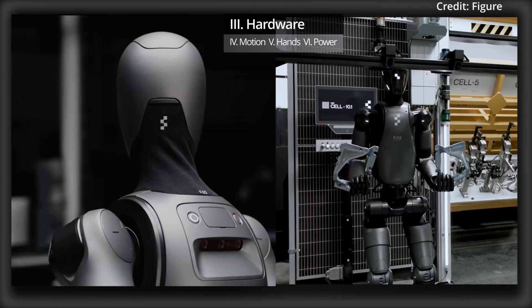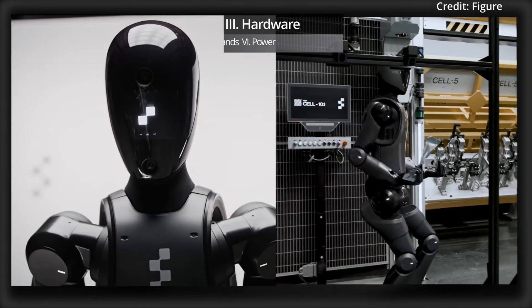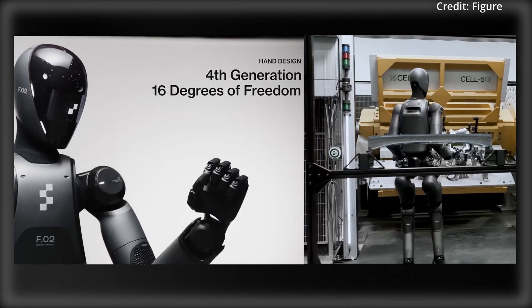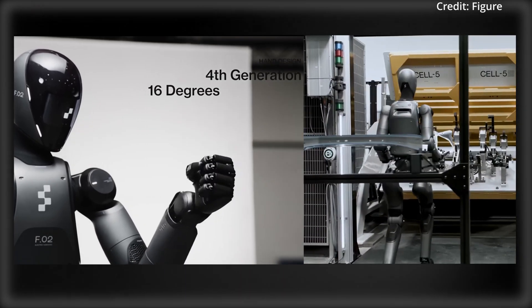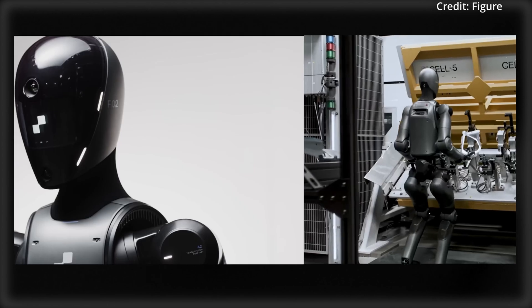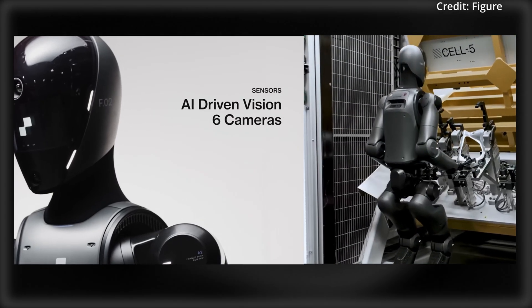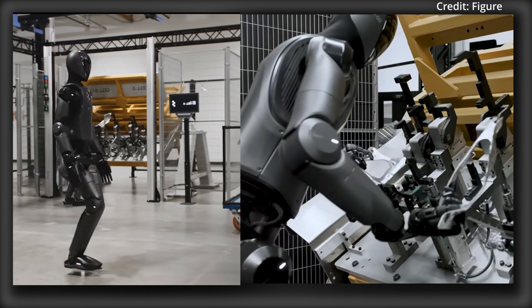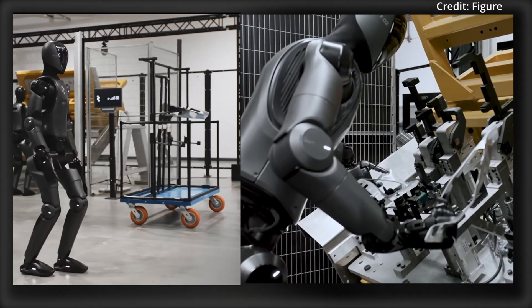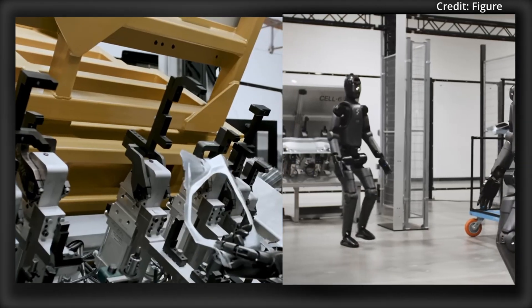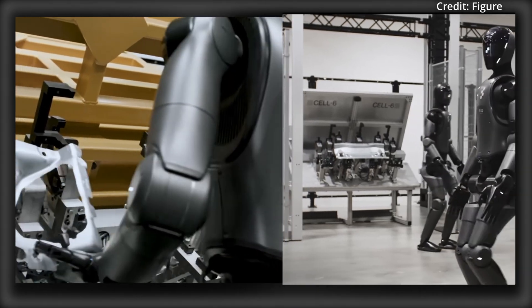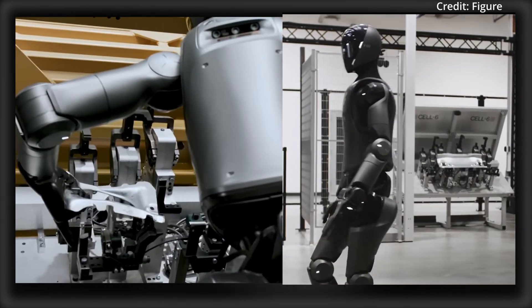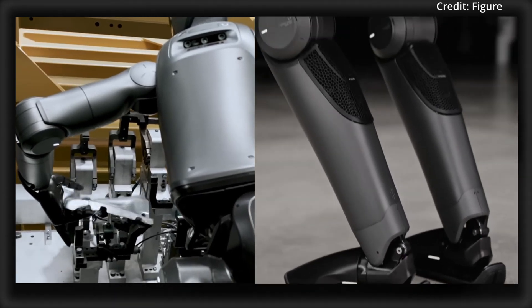But its hardware is even more impressive, as the robot's vision system is equally sophisticated, being powered by a vision language model that interprets data from a total of six RGB cameras. For forward vision, two of these cameras are embedded in its animated face, giving the robot a more human-like appearance, while the others are strategically placed around its body, allowing the robot to create a 360-degree map of its surroundings, recognize objects, and make informed decisions, all completely autonomously.